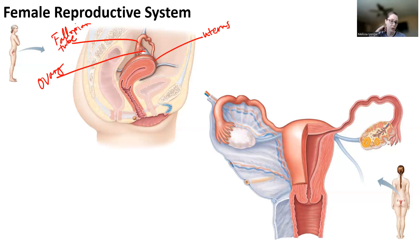So you want to remember the uterus has two essential layers. The innermost layer is the endometrium — that epithelial layer on the inside. And then this is the myometrium layer, the smooth muscle layer that contracts during menstruation and childbirth.